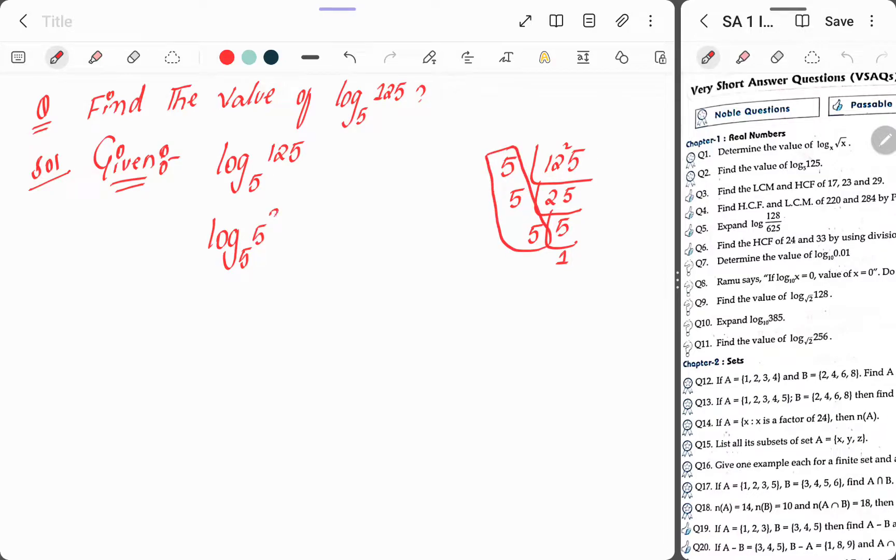So we write 5 to the power of 3. Now bring this 3 before the log: 3 log base 5 of 5.